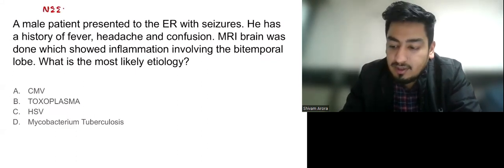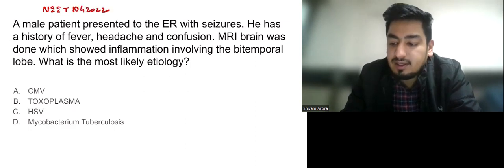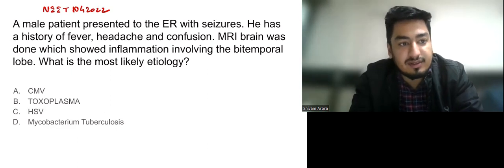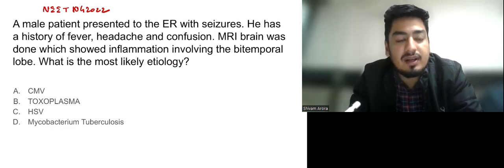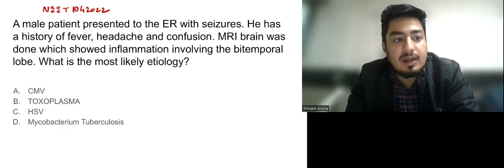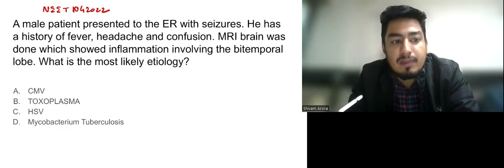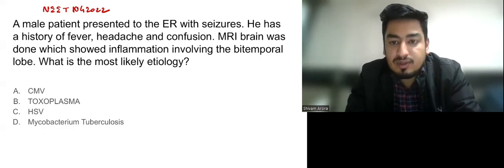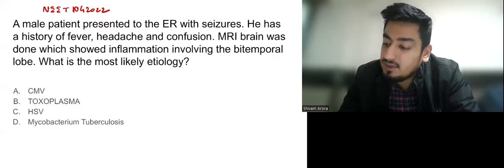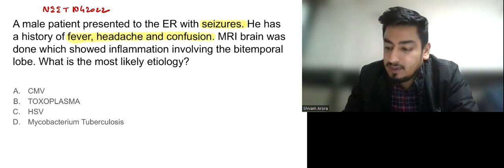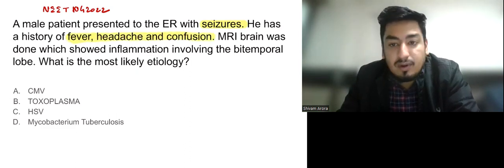The question reads: a male patient presented to the ER with seizures. He has a history of fever, headache, and confusion. MRI brain was done which showed inflammation involving the bitemporal lobe. What is the most likely etiology? First of all, the patient came with seizures and has a history of fever, headache, and confusion.